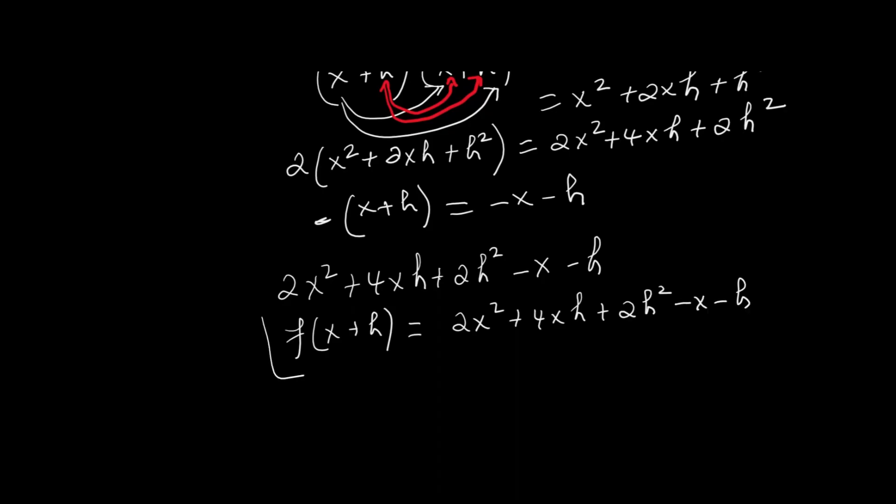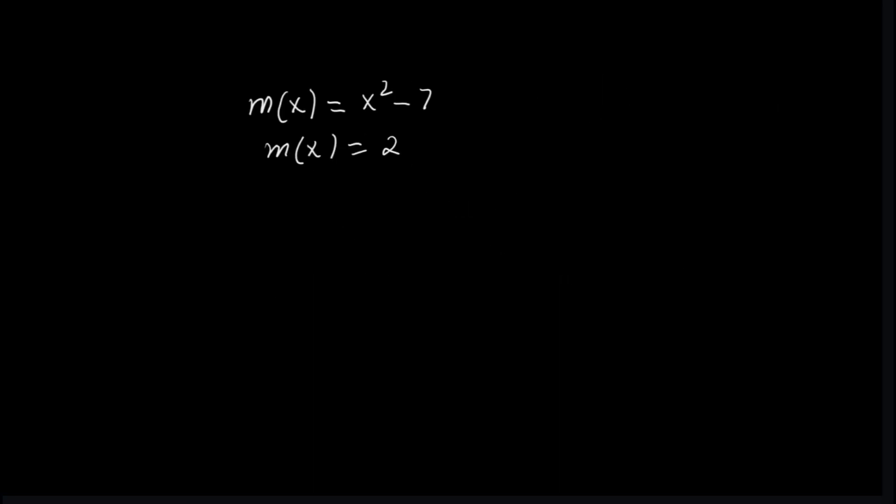When we evaluate a function, we usually start with an input, a value for x. We plug it into the function rule to get the output, or f(x). But what if we're told the output first? For example, m(x) = 2, and we're asked, what value of x gives that result? This process is called working backward. It means solving for the input when you already know the output.